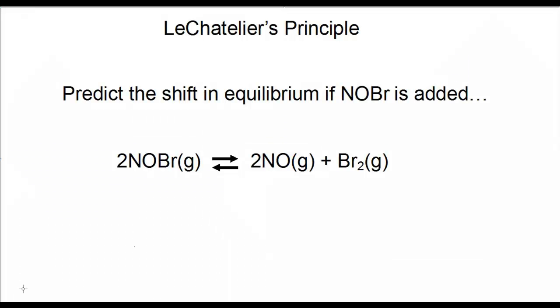In this chemical reaction, predict the shift in equilibrium if NOBr is added. If we were to add additional NOBr to this reaction, we need to realize that it's a reactant, and we're going to increase the concentration on the left side of the reaction. That would cause a shift in equilibrium temporarily to the right.